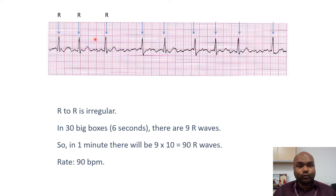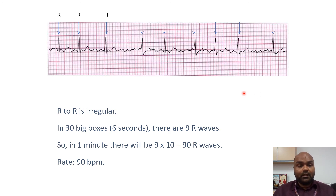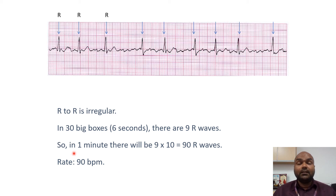Counting the R waves: 1, 2, 3, 4, 5, 6, 7, 8, 9 — there are 9 R waves in 6 seconds. Since 6 times 10 equals one minute, you multiply the number of R waves by 10: 9 times 10 equals 90 R waves in one minute. So the rate is 90 beats per minute. It's that simple to calculate the heart rate for an irregularly irregular rhythm.